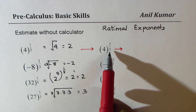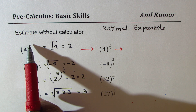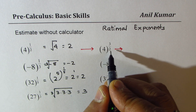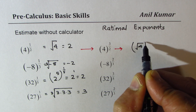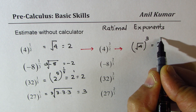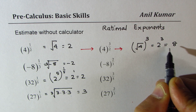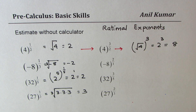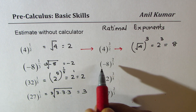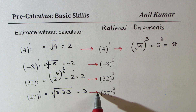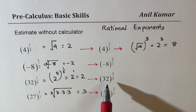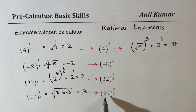Now we have 4 to the power of 3 over 2. Earlier we calculated 4 to the power of 1 over 2, so we do the square root of 4 first, which is 2, and then cube it. 2 cubed is 8 — that is 2 times 2 times 2. Similarly, you can now pause the video and answer the remaining questions, since we have already done half of them. Minus 8 to the power of 1 over 3 has been done; 32 to the power of 1 over 5 has been done; and 27 to the power of 1 over 3 is 3.